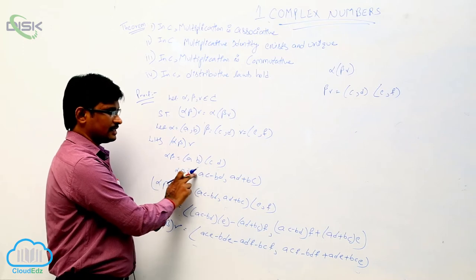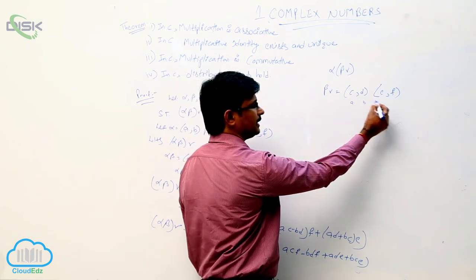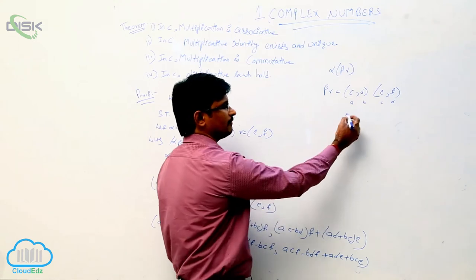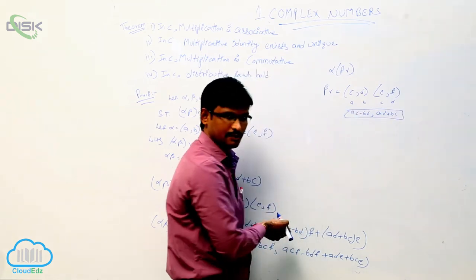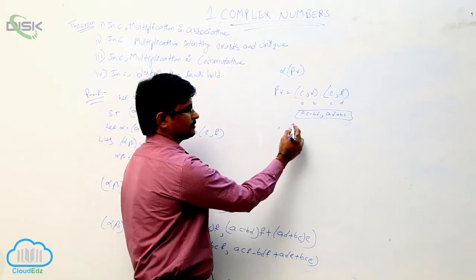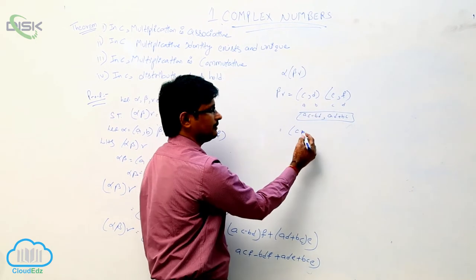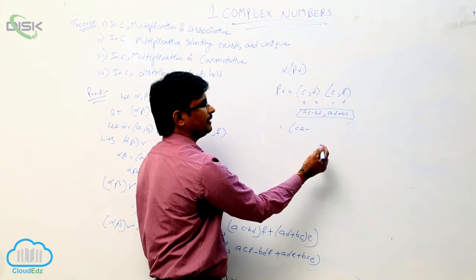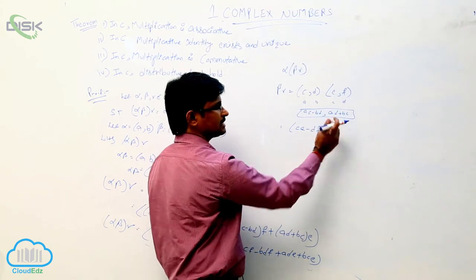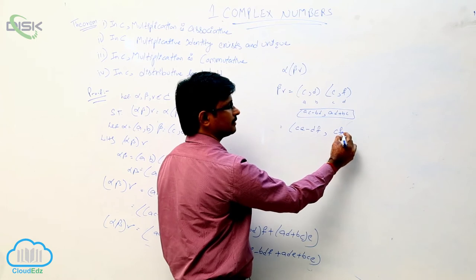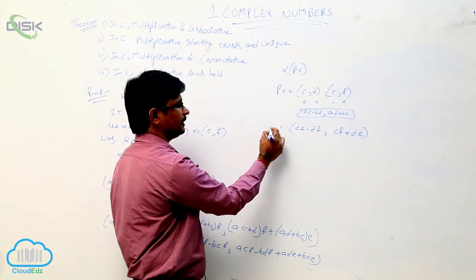Same as like this: beta gamma equals (c, d) into (e, f), which gives (ce minus df, cf plus de). Just identify this as in the form (a, b) multiplied by (c, d). So beta gamma equals (ce minus df, cf plus de). This is the value of beta gamma.